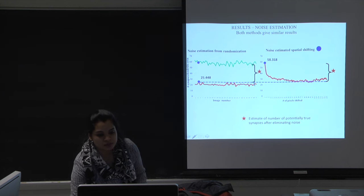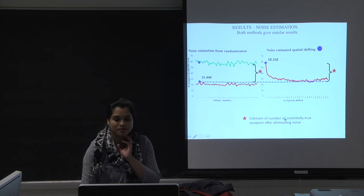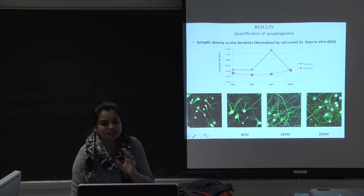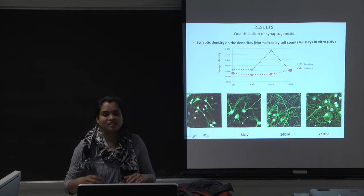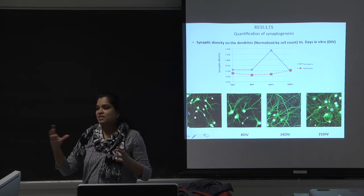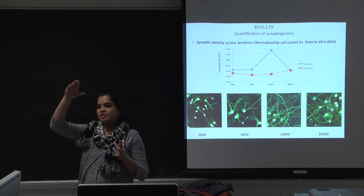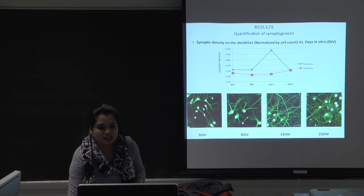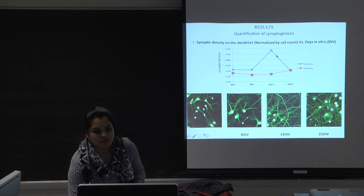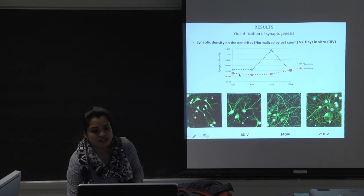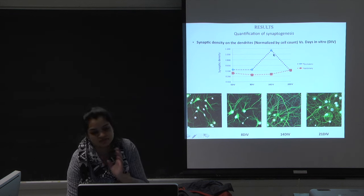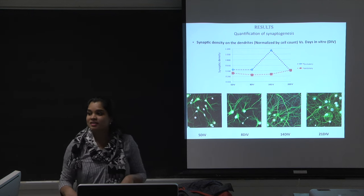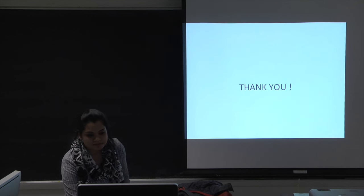The difference between the two values gives an estimate of potentially true synapses. The final slide shows the results of this study: I wanted to understand how synaptic density varies with developmental age. I calculated synaptic density separately for excitatory synapses, shown in blue, and for inhibitory synapses, showing the trend lines of synaptic density development across the different timepoints.